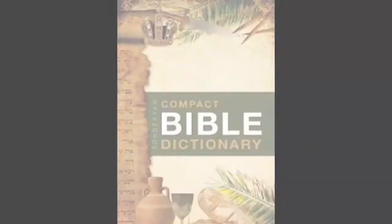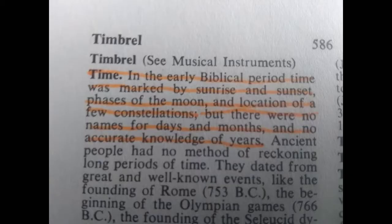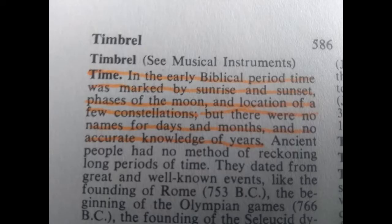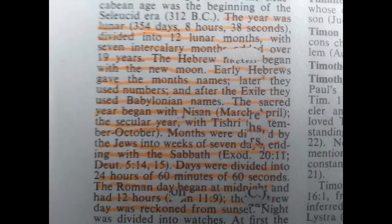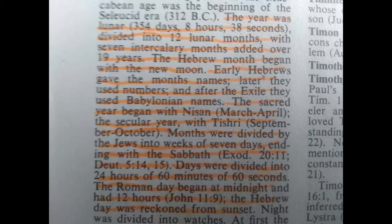The biblical definition of time: in the early biblical period, time was marked by sunrise and sunset, phases of the moon, and location of a few constellations, but there were no names for days and months and no accurate knowledge of years. The year was lunar — 354 days, 8 hours, 38 seconds — divided into 12 lunar months with seven intercalary months added over 19 years. The Hebrew month began with the new moon; early Hebrews gave the months names, later they used numbers.